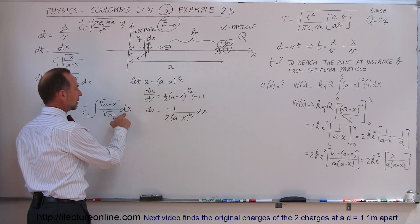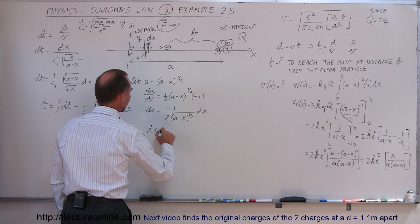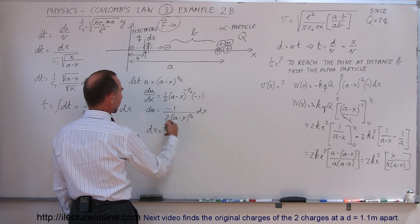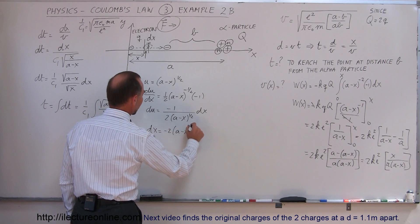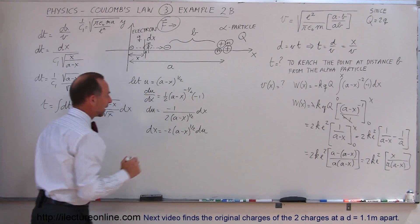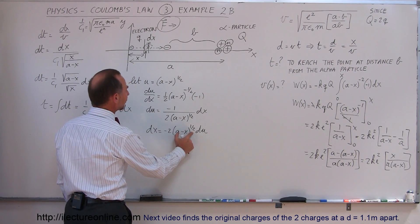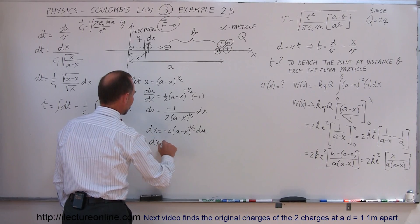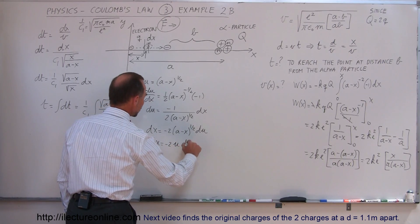Since we have a dx here, solving for dx: dx equals minus 2 times (a minus x) to the 1/2 power, times du. And since (a minus x) to the 1/2 is equal to u, we can write dx equals minus 2u du.